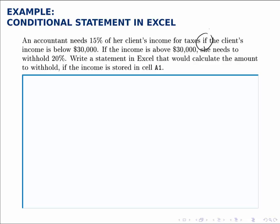If the income is above $30,000, so if the first statement is not true, she needs to withhold 20%. We want to write a statement in Excel that will calculate the amount to withhold if the income is stored in cell A1.